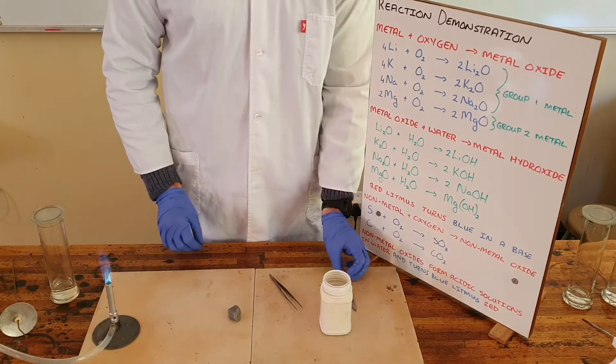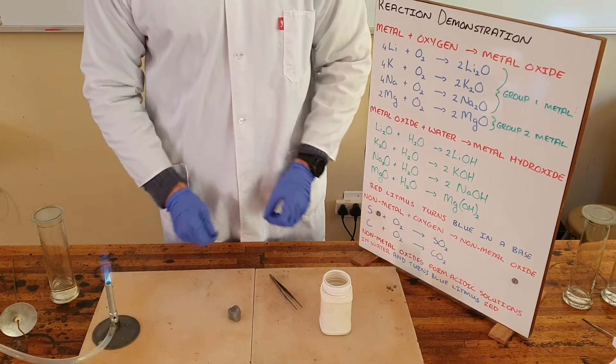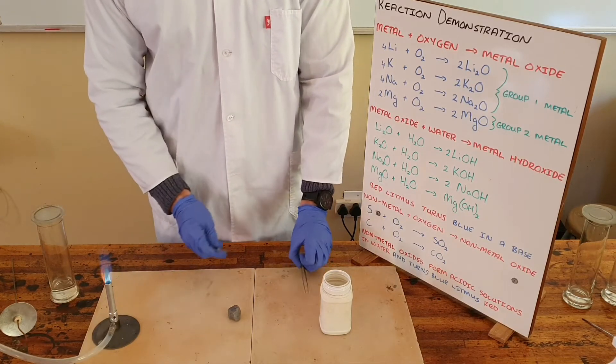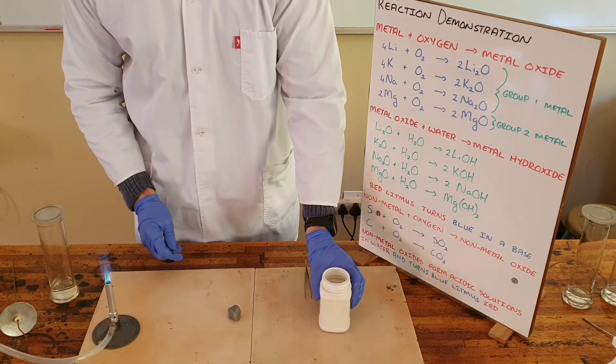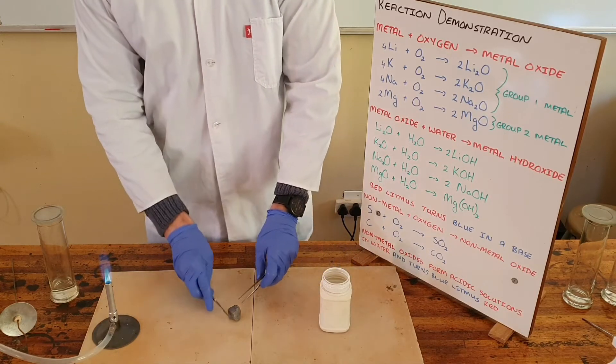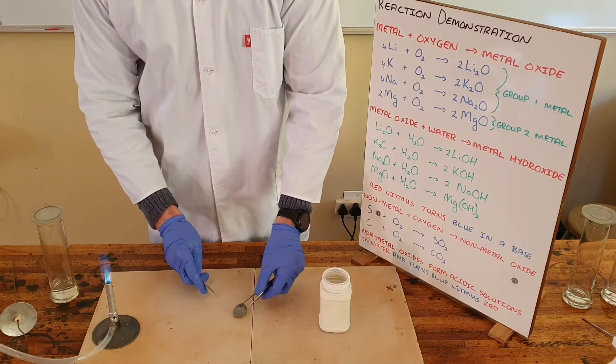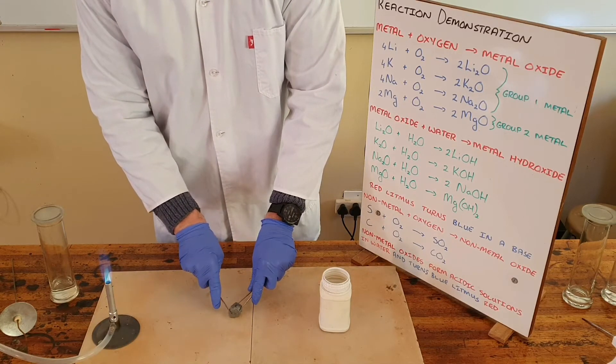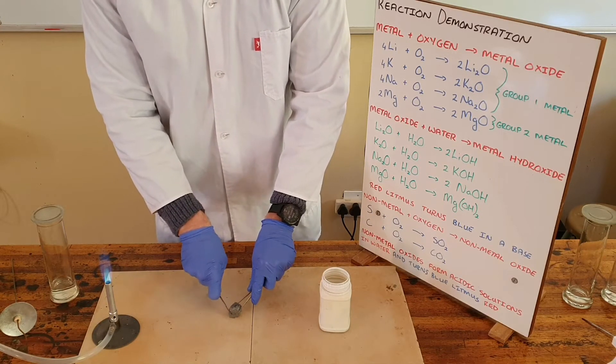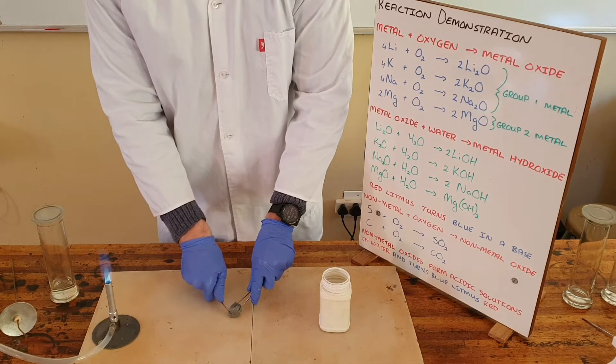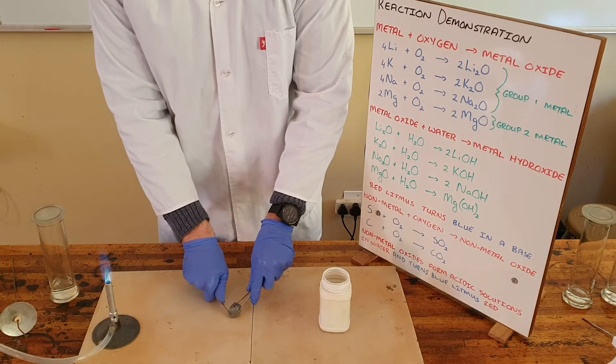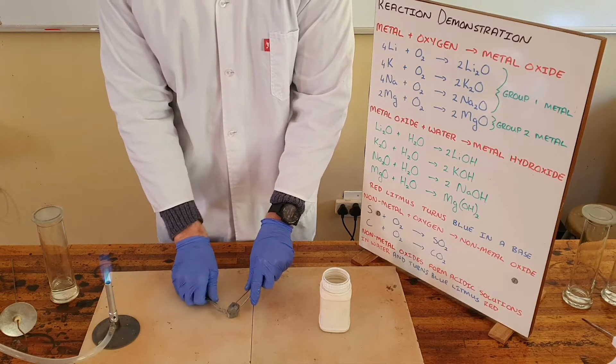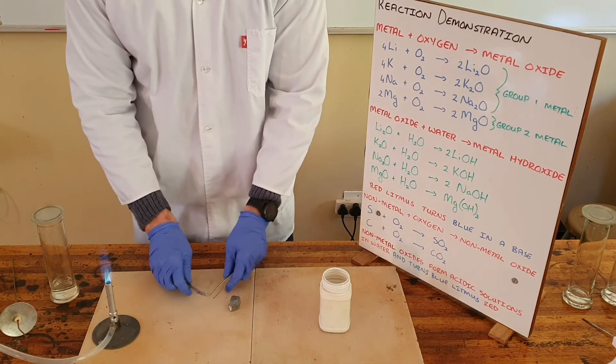We can demonstrate the reaction of metals with oxygen in a combustion reaction by starting with lithium. Here we have some lithium that is stored in paraffin or some kind of oil. The reason for that is because it is a group one element, and we know that group one elements are very reactive, specifically with water. So we don't store it in air because there's very often water vapor present in the air that it can react with.